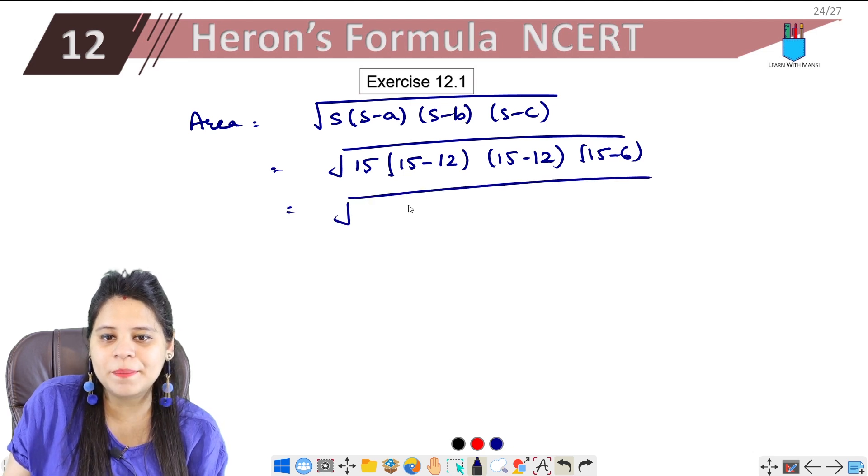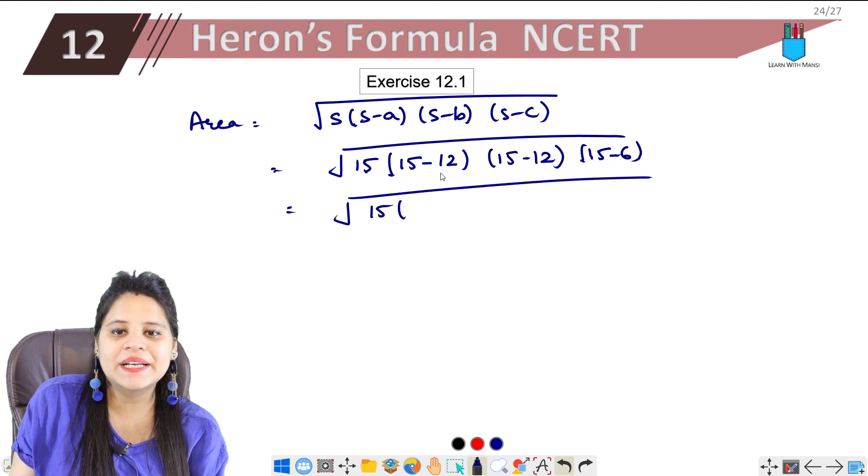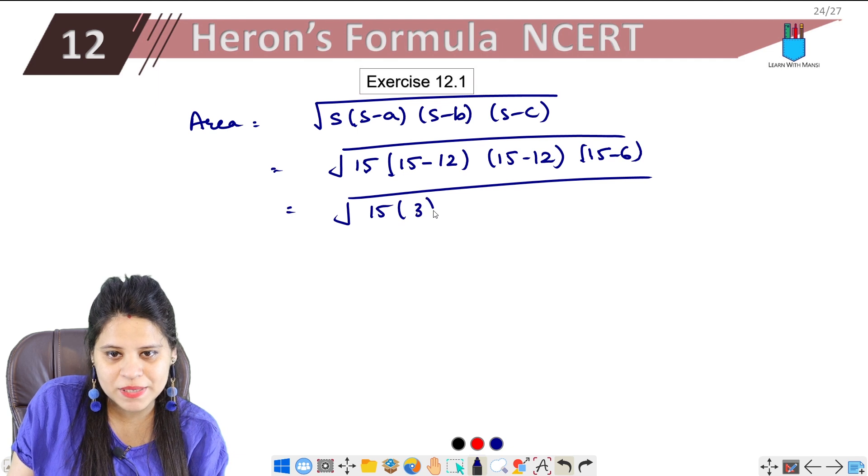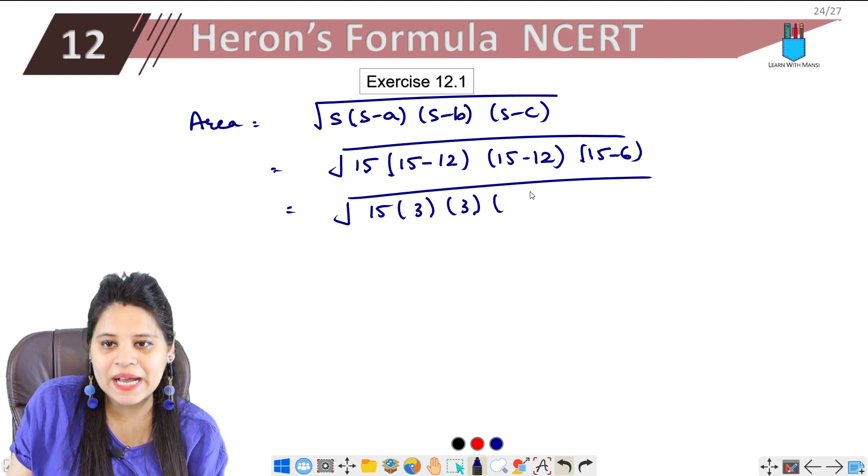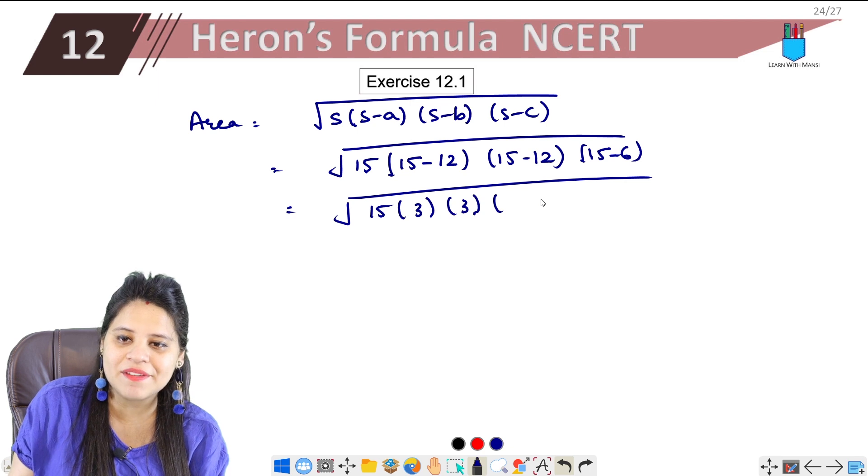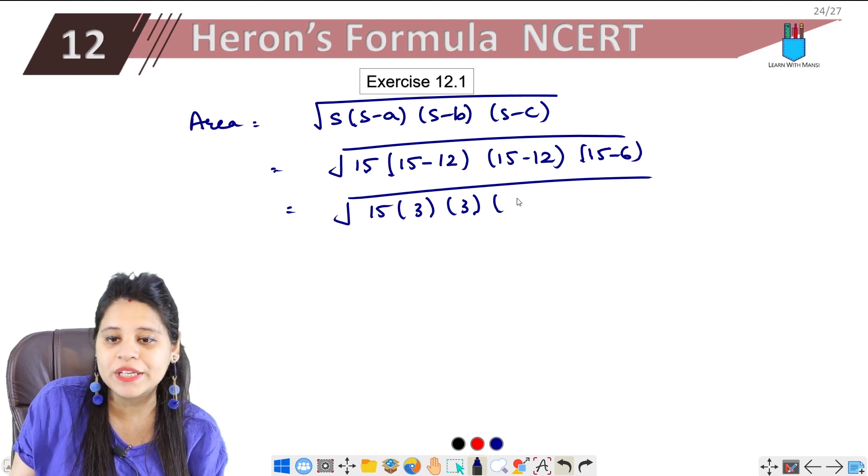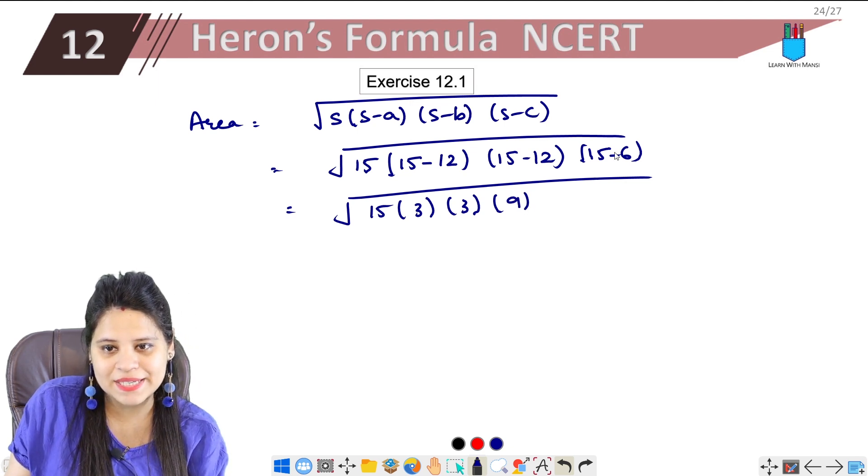So we have 15, then 15 minus 12 is 3, then 15 minus 12 is again 3, and 15 minus 6 is 9.